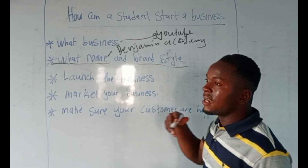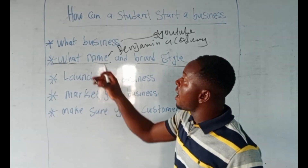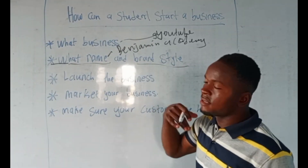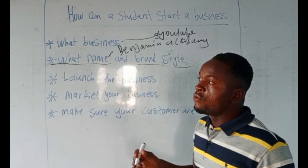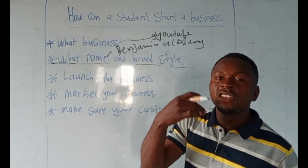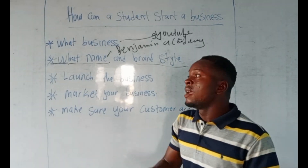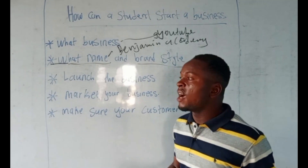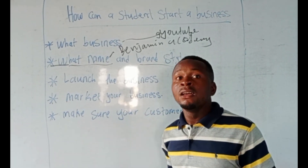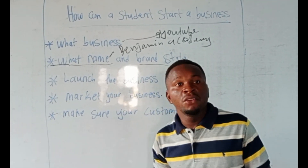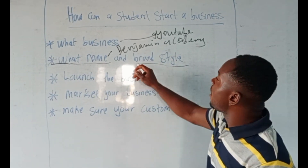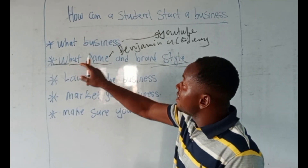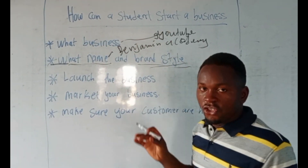The next is the brand style — what do you want to be doing in that YouTube channel? You can know the business, you know the name, but you don't know what you will be doing in that business. At Benjamin Academy, what we do is video lectures to teach students and people on different aspects: career building, the various businesses we cover, how entrepreneurs can invest, and advanced level subjects like economics, history, and geography. That is our brand style.